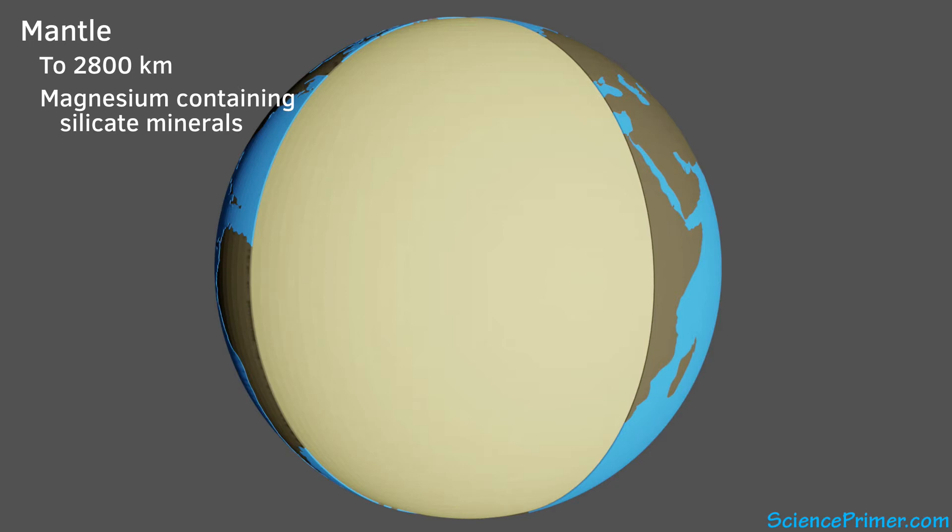The top layer of the mantle, just below the crust, is rigid like the crust. The crust and this rigid layer of the mantle are together called the lithosphere. The lithosphere ends about 100 kilometers below the surface.